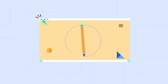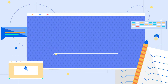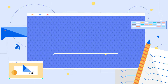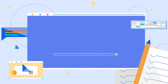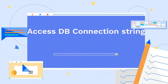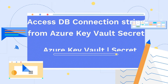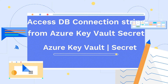Hello friends, welcome back to my channel Learn Smart Coding. In this video, I'm going to show you how to place your database connection string in Azure Key Vault secret and configure that secret to be accessed from your web application configuration in Azure App Service. Once we deploy our application to the Azure Web App, we will be able to access the connection string and connect to the database.